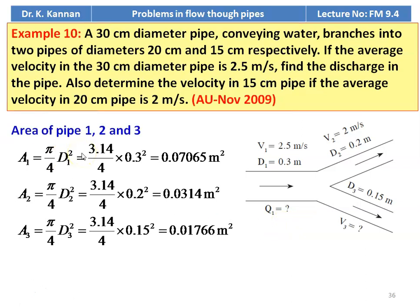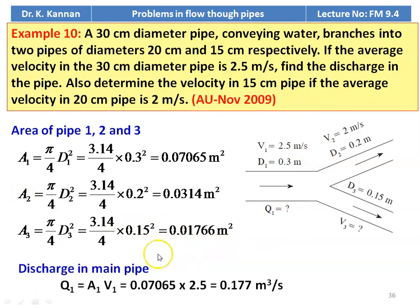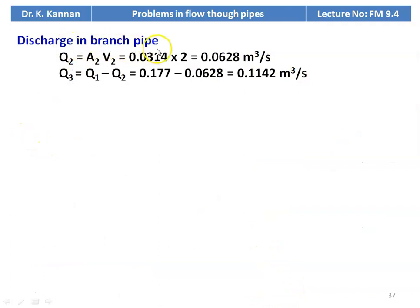Calculating the areas: A1 = π/4 × 0.3² = 0.07065 m²; A2 = π/4 × 0.2² = 0.0314 m²; A3 = π/4 × 0.15² = 0.01766 m². Discharge in the main pipeline: Q1 = A1 × V1 = 0.07065 × 2.5 = 0.177 m³/s. Discharge in branch pipe 2: Q2 = A2 × V2 = 0.0314 × 2 = 0.068 m³/s. By continuity: Q3 = Q1 − Q2 = 0.177 − 0.068 = 0.1142 m³/s.